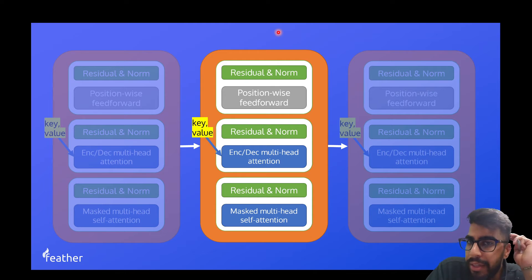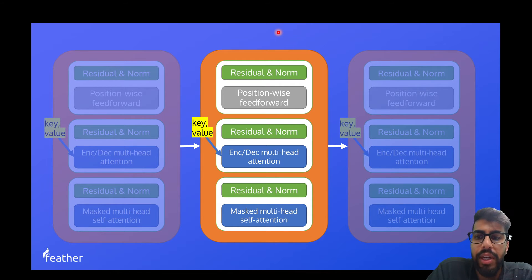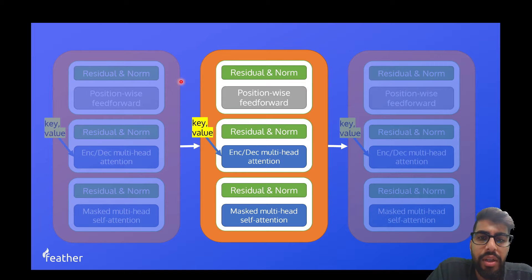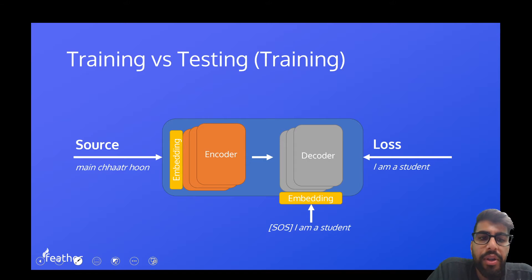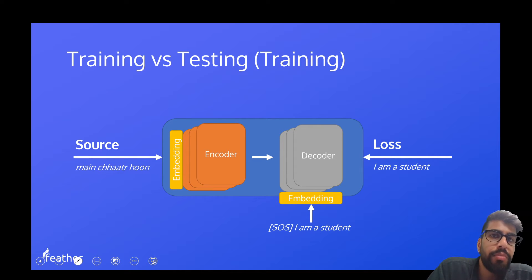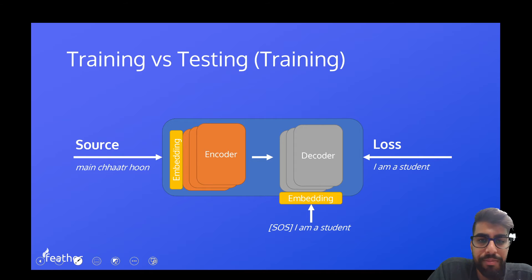Similarly to the encoder layers, the output of one decoder layer forms the input into the next decoder layer. There's also a difference in the transformer between training and testing. We'll talk about training, then testing, and then we can get on to masked multi-head self-attention.